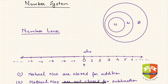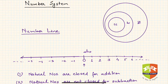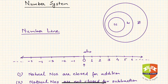For example, the set of natural numbers was not closed for subtraction. That means if you subtracted a bigger number from a smaller number, you would not get a solution within the same set of natural numbers, so we had to move to the set of whole numbers.